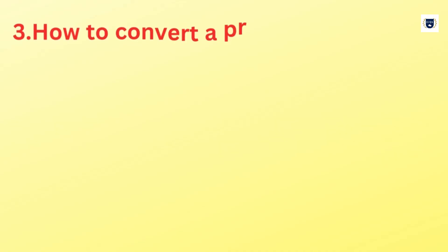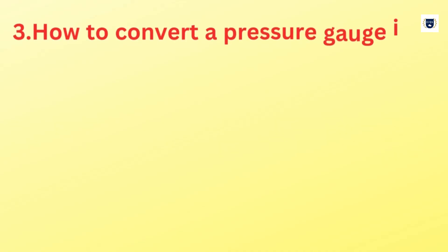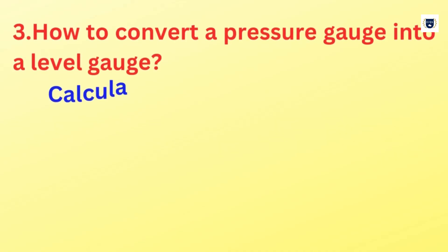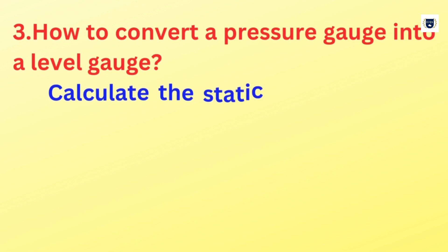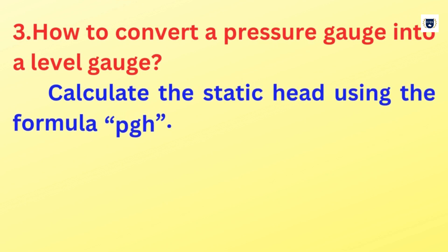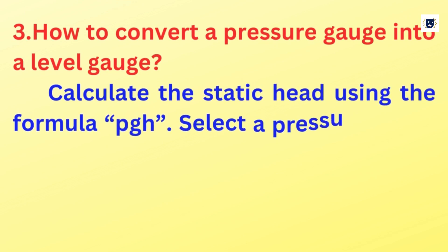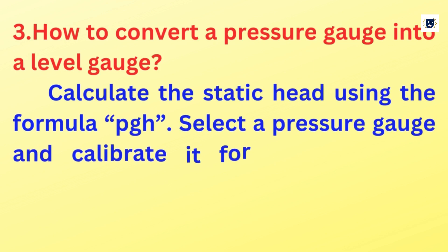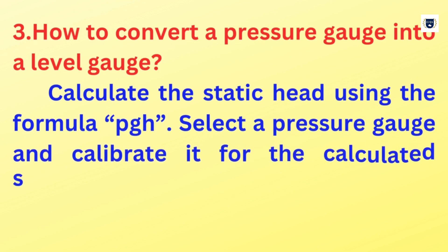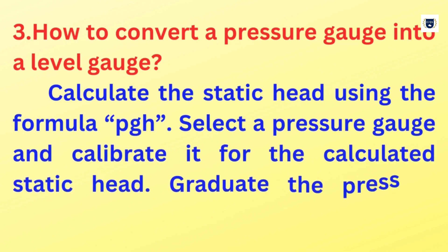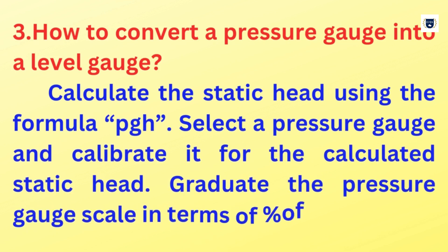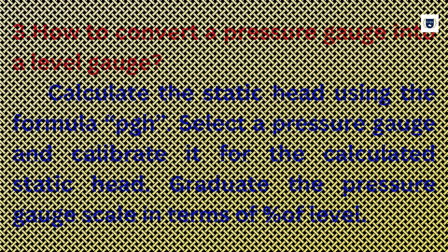How to convert a pressure gauge into a level gauge? Calculate the static head using the formula PGH. Select a pressure gauge and calibrate it for the calculated static head. Graduate the pressure gauge scale in terms of percent of level.